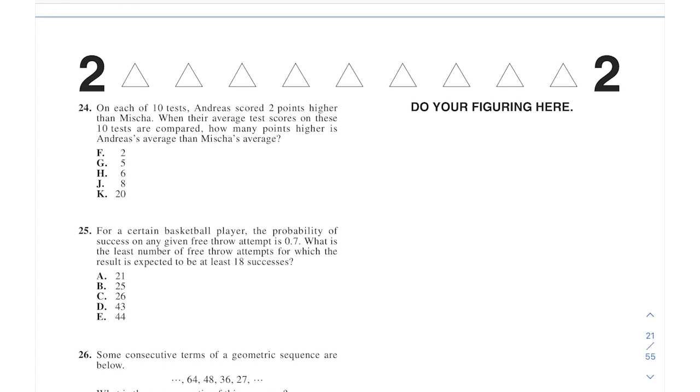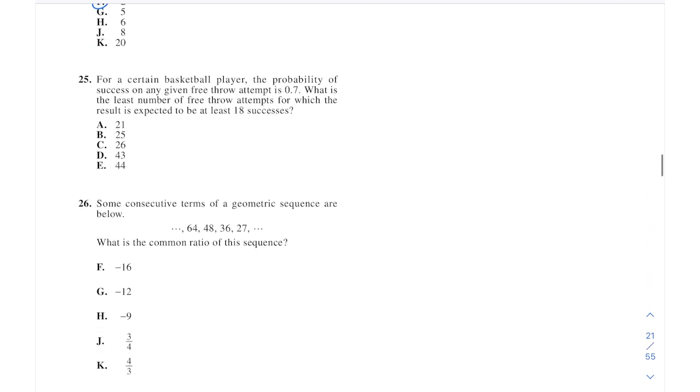Let's take a look at 24. Dre scores two points higher than Misha. Our scores, compare how many points higher is. Yeah. If you're two points higher on every single test, then that just means your average will be two points higher overall. It's kind of a trick question there. But if you understand averages from a conceptual standpoint, that's not bad.